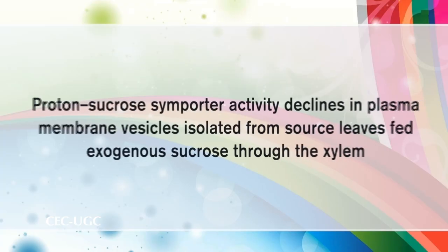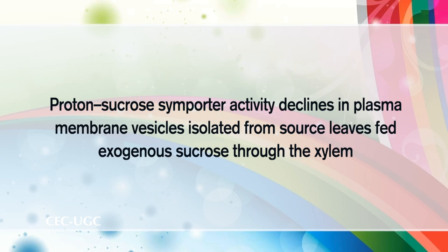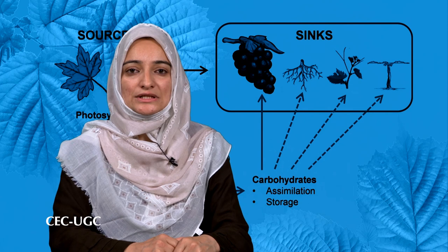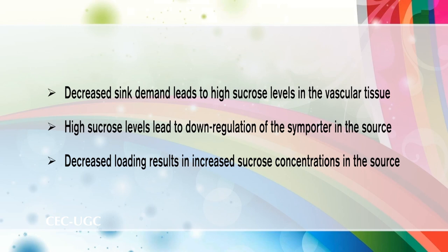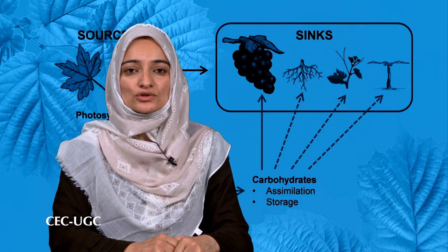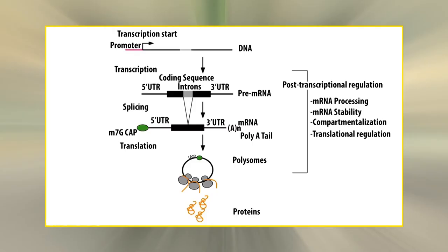In sugar beet, proton-sucrose symporter activity declines in plasma membrane vesicles isolated from source leaves fed exogenous sucrose through the xylem. This loss of symporter activity is accompanied by a decline in symporter mRNA, suggesting an effect on transcription or mRNA stability. A working model includes the following steps: first, decreased sink demand leads to high sucrose levels in the vascular tissue; second, high sucrose levels lead to down-regulation of the symporter in the source; third, decreased loading results in increased sucrose concentrations in the source; and finally, increased sucrose concentrations in the source can result in a lower photosynthetic rate. In some sourcing systems, sugars and other metabolites interact with hormonal signals to control gene expression.